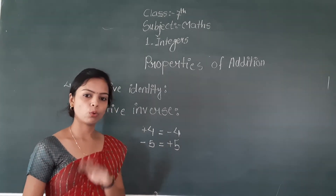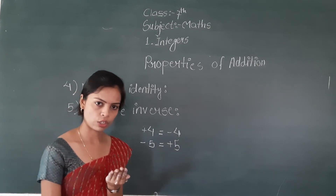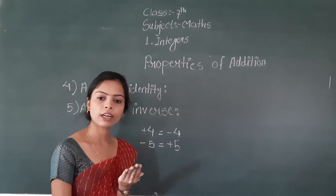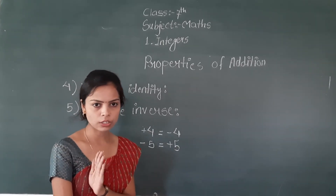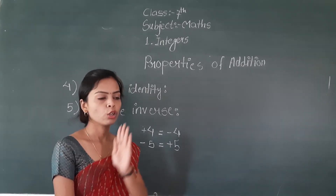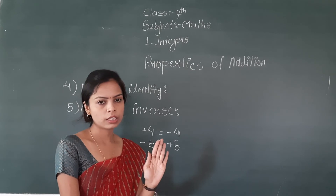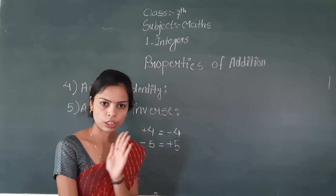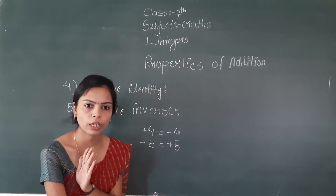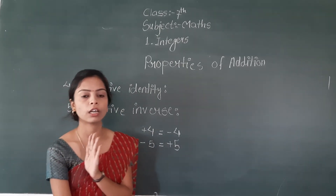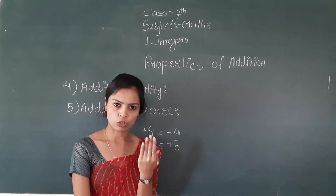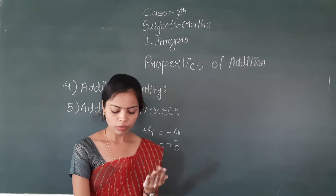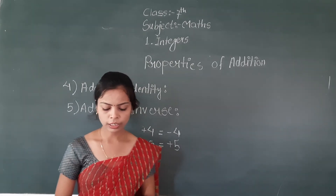The additive inverse of zero is zero itself. If you leave zero aside, for any integer: the additive inverse of a positive integer is a negative integer, and the additive inverse of a negative integer is a positive integer.